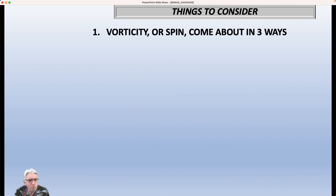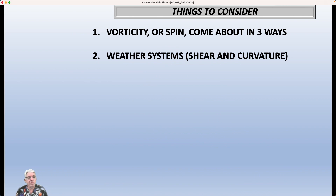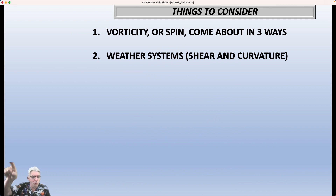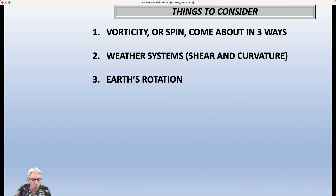First of all, vorticity or spin in the atmosphere comes about in three ways. Weather systems produce two of the three, and we've talked about this on earlier bonus weather videos. You have a curvature in the flow, which creates vorticity. Then you have shear — if you think about a hypothetical telephone pole suspended just above the ground, and the wind is stronger at the top of the pole than at the bottom, then it's going to start to rotate. So you get vorticity by changes in wind speed over a given distance, and that axis of rotation can be vertical, horizontal, or all sorts of different things. The Earth's rotation also contributes vorticity as well.